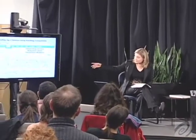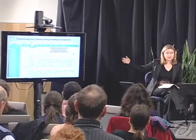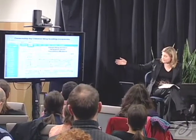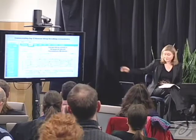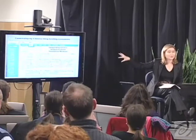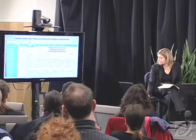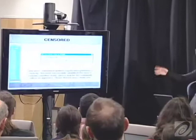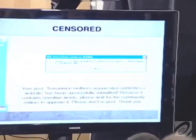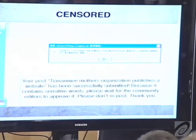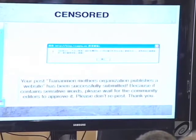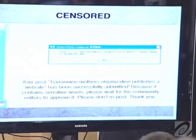The onus is put on private enterprises to keep overly sensitive content off the web — not just block it, but keep it off entirely. In one study, I posted content across a series of different blog hosting services. I took an article about the Tiananmen mothers — the mothers of people killed in the Tiananmen crackdown — and pasted it into the Tianya blogging service. After hitting publish, it wouldn't let me publish the post. An error message said the post contained sensitive words and to wait for community editors to approve it. It never gets published. It disappears into the ether.